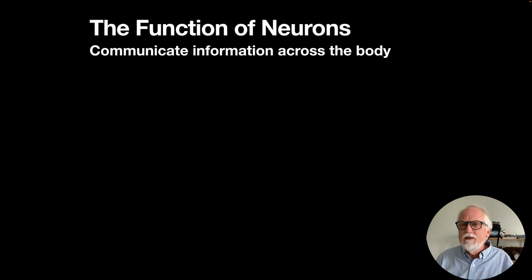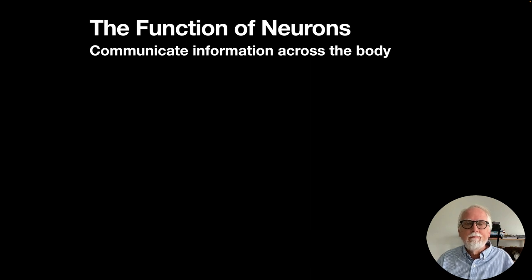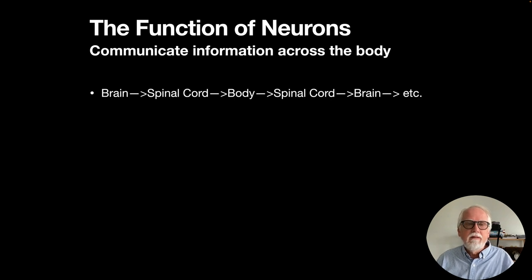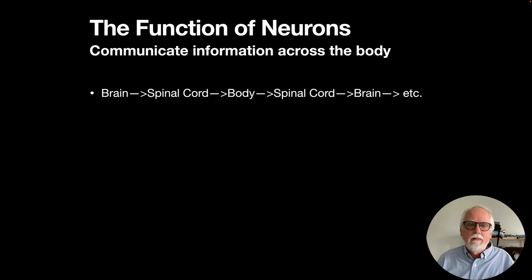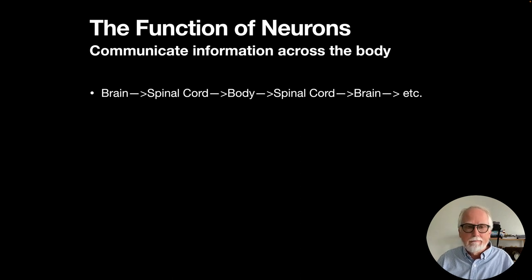What is the function of neurons? Neurons basically communicate information across the body, following this pathway: from the brain to the spinal cord out to the body, and then the body gives information back to the spinal cord, which passes it up to the brain. This is what's happening constantly across the nervous system.